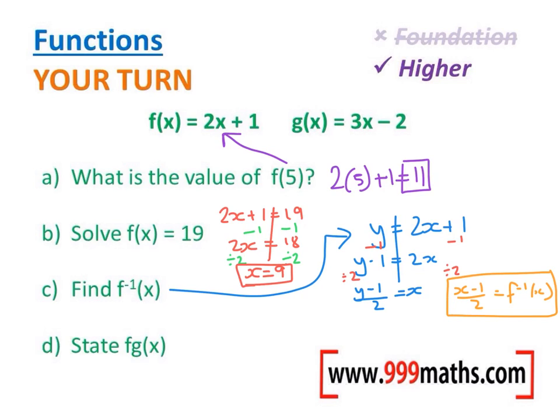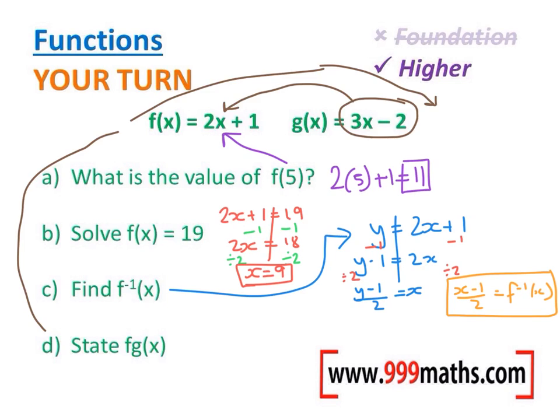Finally, part d. Remember, this is the one where we start with our g equation and we put it into our f equation. As before, I'm doing this in the top right hand corner of the page. So the g equation, 3x - 2, we need to put that into our f one. We need to swap that x for what the g equation was. So instead of 2x + 1, it's 2(3x - 2) and then add 1. Let's simplify that now to give me a final answer of 6x - 3.